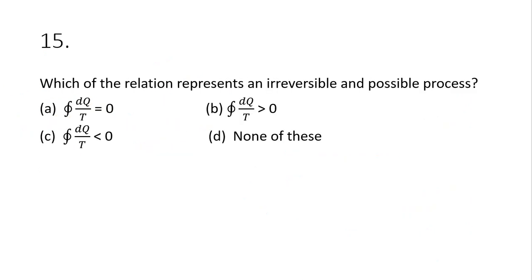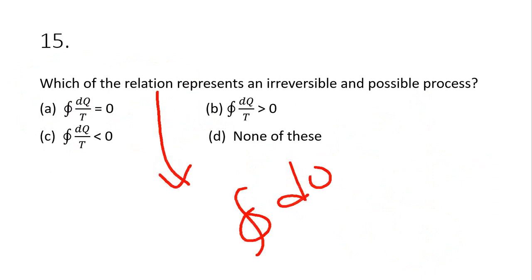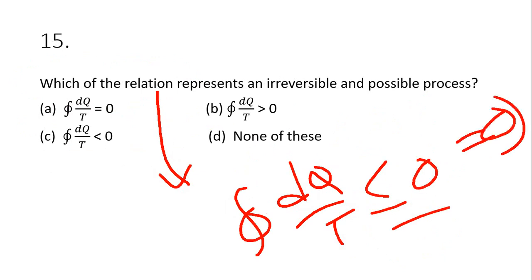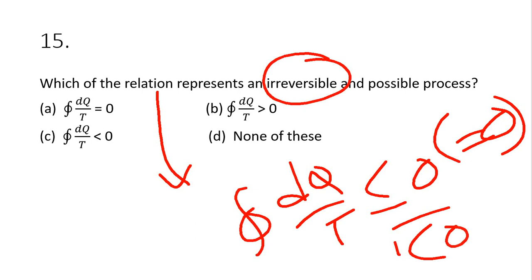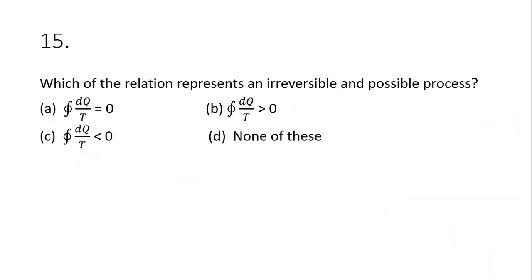Question 15: which relation represents an irreversible and possible process? From the Clausius inequality, ∮dQ/T ≤ 0: equal to zero means reversible, less than zero means irreversible and possible. The question asks for irreversible, so dQ/T < 0. Option C is the correct answer.